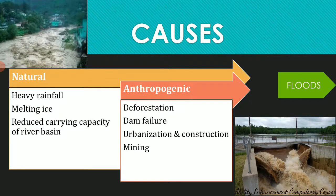The natural causes of flooding include heavy or prolonged rainfall over a long period of time. Melting ice and snow can also cause floods, especially in hilly regions. A third natural cause is that a river basin's carrying capacity gets reduced due to landslides or silt deposition. In the Kosi river, heavy siltation raises the riverbed, reducing carrying capacity so that water changes its path and flows over onto the land.